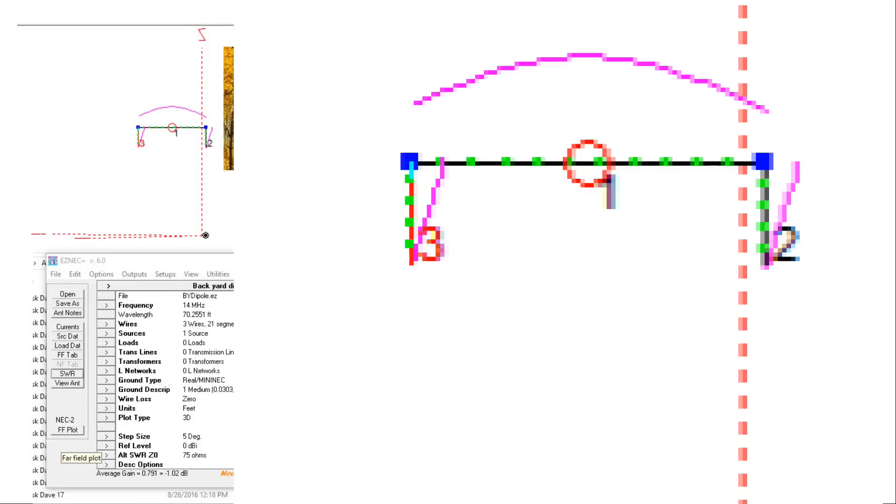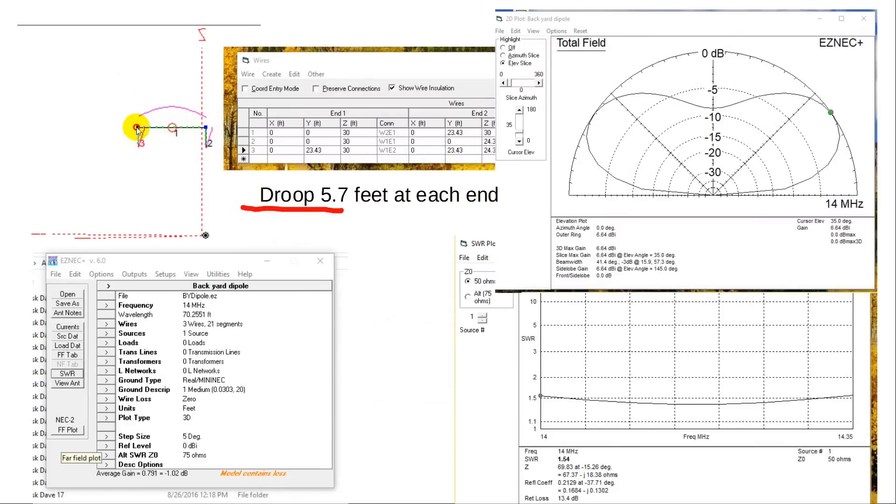And we're going to see what happens when we start changing things from here. All right, at this point we're going to droop. Now, this is not the same length dipole. What we've done is taken the dipole out here and let it come down like this. So that this length up here is only 23.43 feet. So it's much shorter. And then we've let a droop come down here.